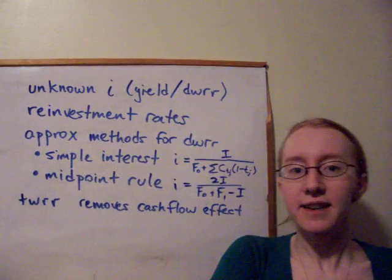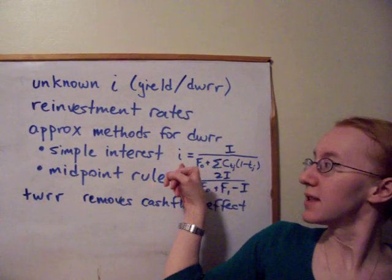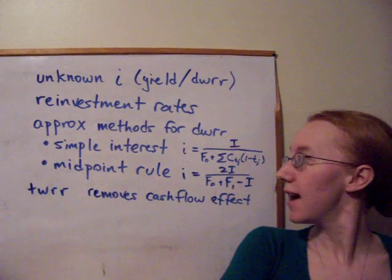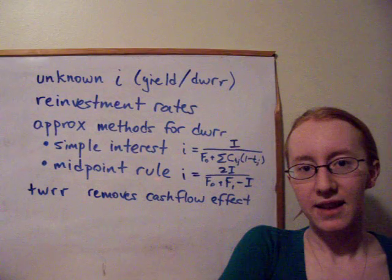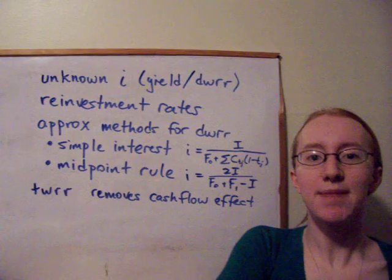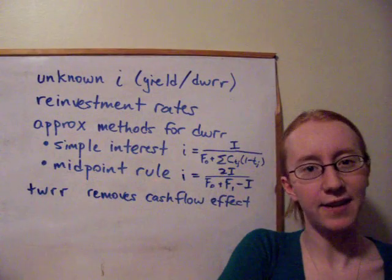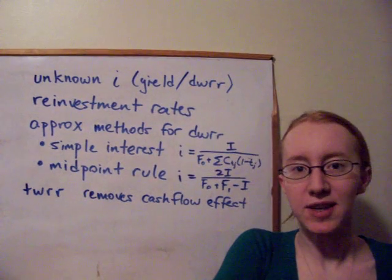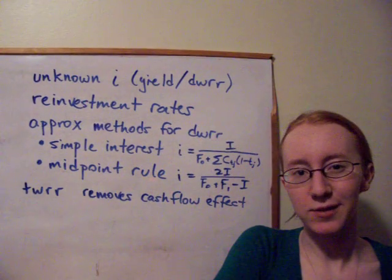Then it turns out that we can get an approximation for the yield rate i, or the dollar rated rate of return, as just i over f0, the initial value in the fund, plus all of the cash flows times the amount of time those cash flows are in the account. And that gives us this really nice formula, a really easy approximation to the actual dollar rated rate of return.